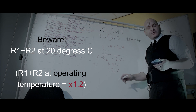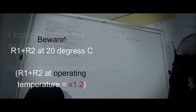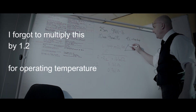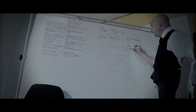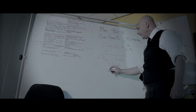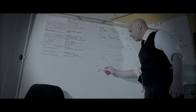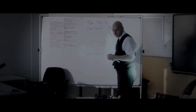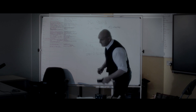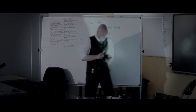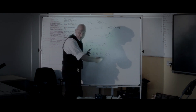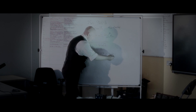How do we get a fault current from that? Using V equals IR, we divide 230 by 0.361, and we get 637 amps.